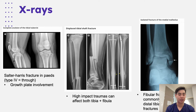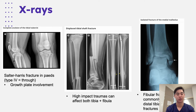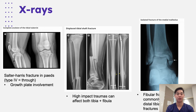Looking at x-ray examples of these three different regions: the first example involves the tibial plateau. Because this is a paediatric case, we consider the Salter-Harris classification — in this instance, because it goes through the tibial plateau and the growth plate, it would be a type four, which affects our management. The tibial shaft injury is generally from high impact traumas that can affect both the tibia and fibula. Lower down, we have the distal malleoli, where we must be careful as other structures like the fibula can also be injured.